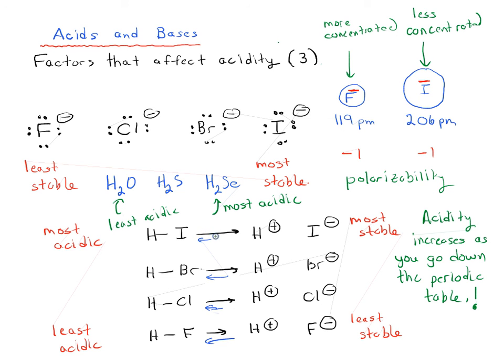So like I said, bottom line, acidity increases as you go down the periodic table, and this is because your atoms become more polarizable and better able to stabilize negative charge.